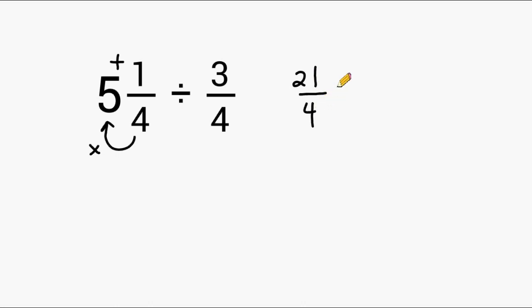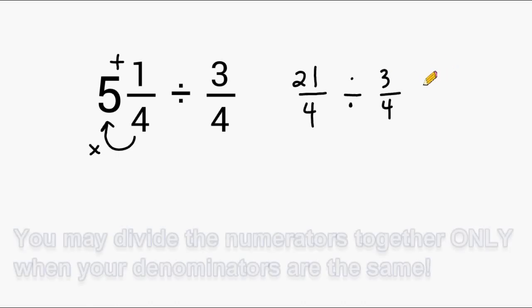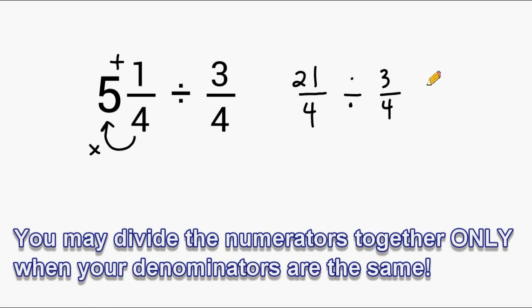Now we have to take this improper fraction and divide it by 3 quarters. Whenever you are dividing two fractions together and the denominators are the same, all you really have to do is take the two numerators and divide them together. 21 divided by 3 is equal to 7. So we already know that the answer to this problem is going to be 7.